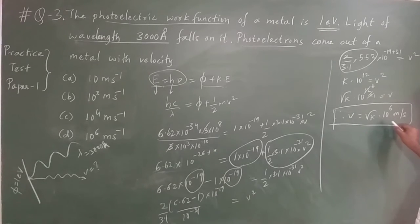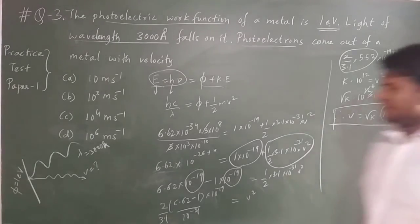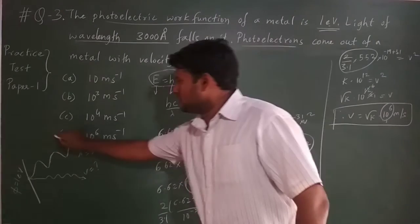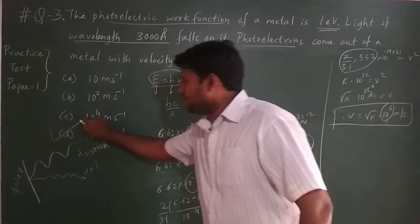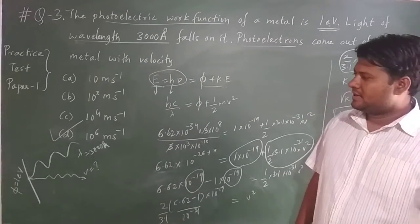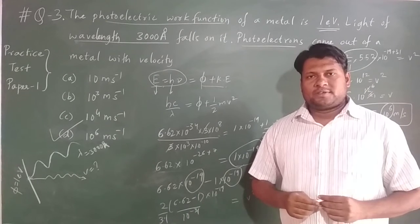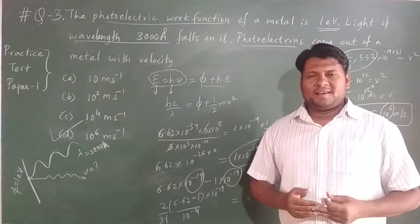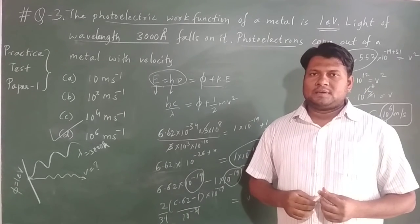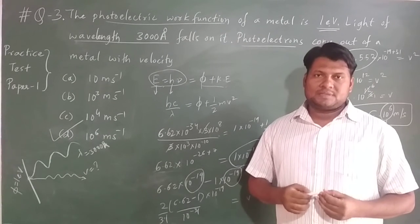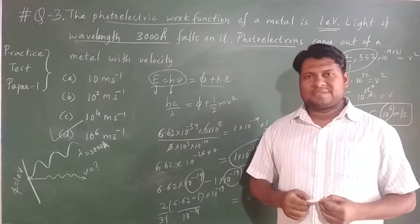The order of the answer is 10⁶ meter per second, which matches option D. So the velocity of the photoelectrons has been calculated, and the order of the velocity of photoelectrons is 10⁶ meter per second.